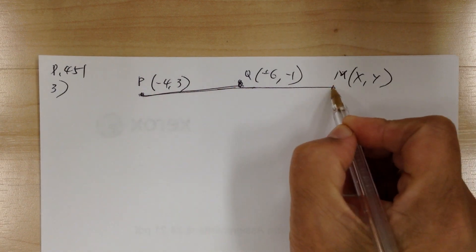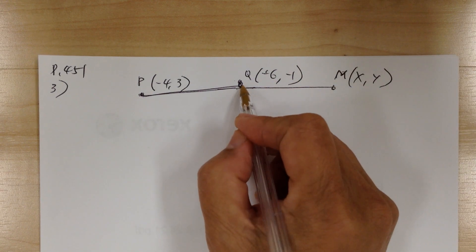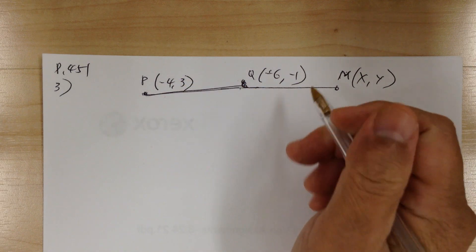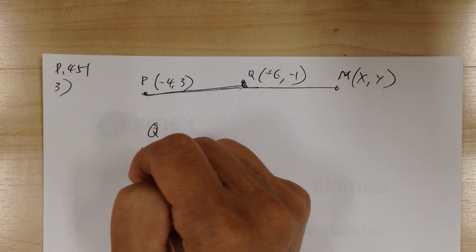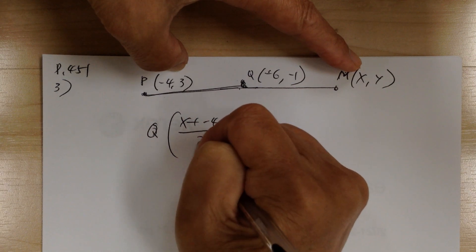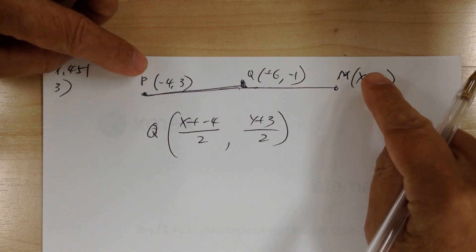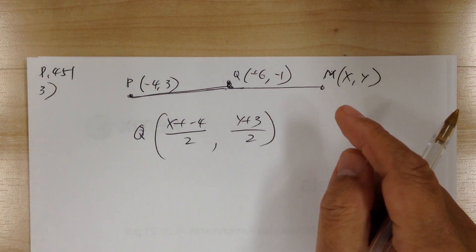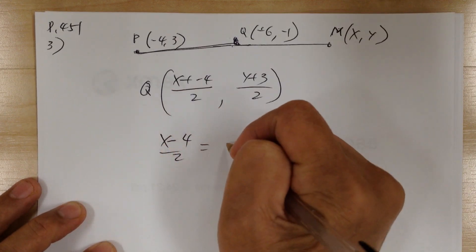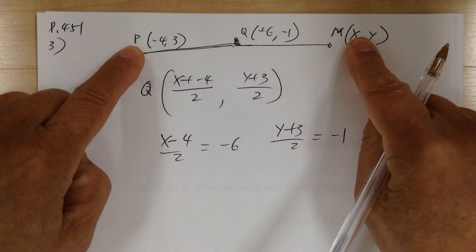Using the midpoint formula: in this case Q is the midpoint. Q is actually the average of two points, so it's going to be x plus negative 4 over 2, and y plus 3 over 2. You add and divide by 2 to get the midpoint. So x minus 4 over 2 equals negative 6, and y plus 3 over 2 equals negative 1.